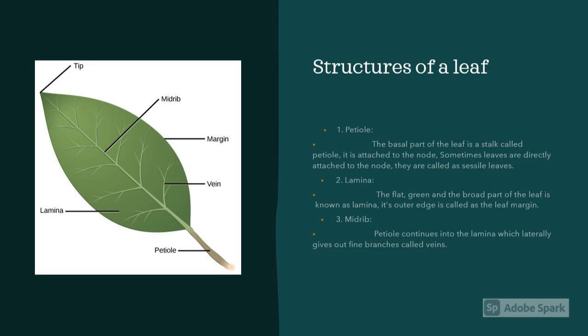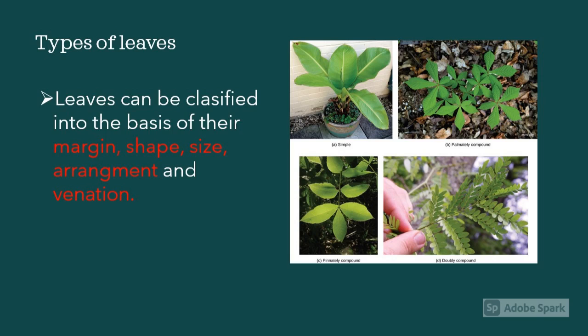Some leaves are in various colors because of other pigments. We'll understand it later. Now let's understand the structures of the leaf. Lamina is the flat green part of the leaf where photosynthesis happens. It is connected to the midrib which extends as the petiole, which connects the leaf to the plant. As I said, there are many types of leaf and they are classified by their shape, size, margin and arrangement.